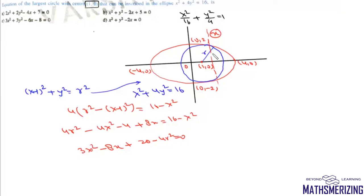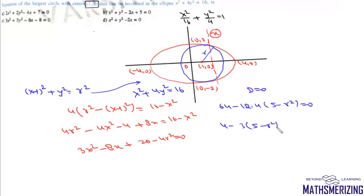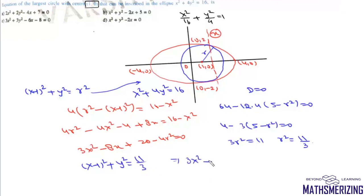For tangency, the discriminant must equal zero: b² - 4ac = 64 - 12(20 - 4r²) = 0. Simplifying: 4 - 3(5 - r²) = 0, giving 3r² = 11, so r² = 11/3. The equation of the largest inscribed circle is (x-1)² + y² = 11/3, or equivalently 3x² + 3y² - 6x - 8 = 0 — option C.